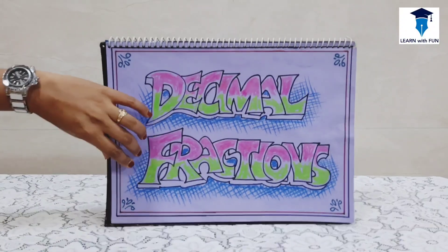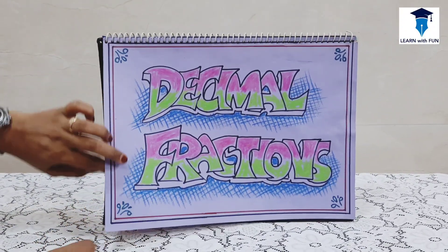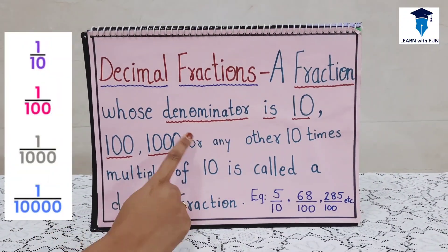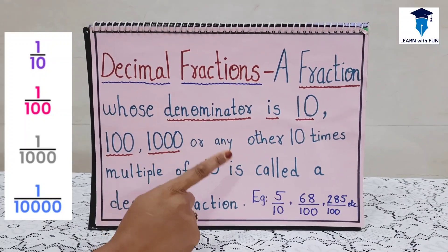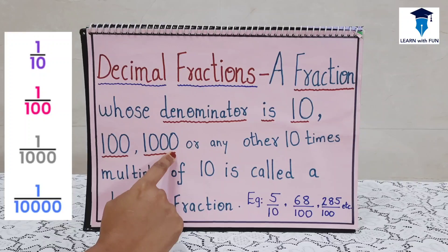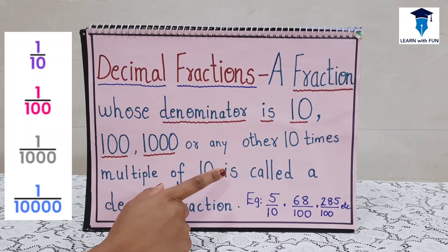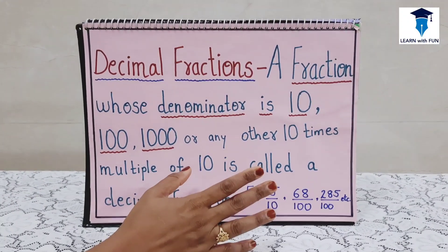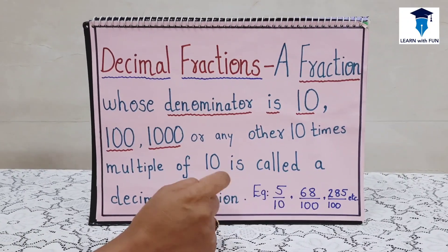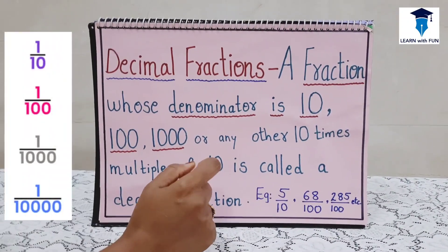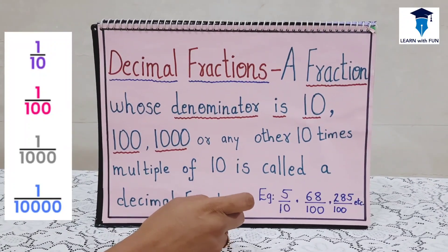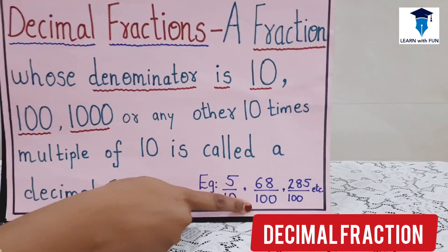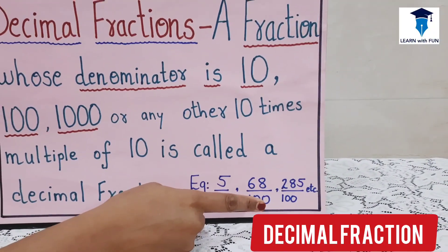Let's begin the concept. First we need to know what is a decimal fraction. A fraction whose denominator is in the multiple of 10, 100, 1000, and so on — in simple terms, any number whose denominator is a multiple of 10 is called a decimal fraction. The numerator can be any number, but at the denominator's place it can be either 10, 100, 1000, and so on. Examples: 5 upon 10, 68 upon 100, 285 upon 100, etc.